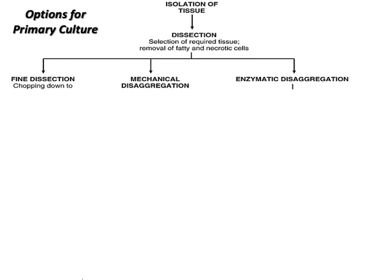Now that tissue has been isolated — we have discussed how to isolate tissue from mouse embryo and chick embryo — after dissecting and isolating tissue, you remove any fatty tissue and necrotic cells. You can then perform fine dissection chopping, mechanical disaggregation, or enzymatic disaggregation.